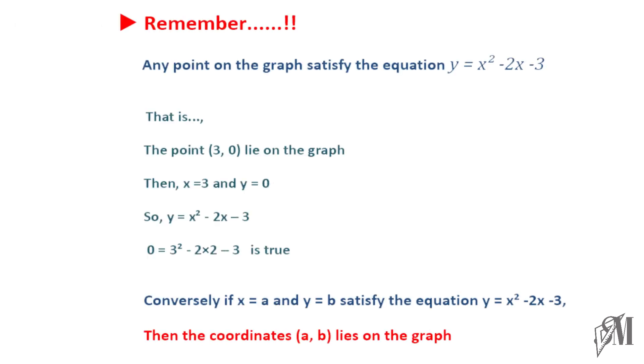You should remember that any point on the graph satisfies the graph equation y equals x squared minus 2x minus 3. That is, the point (3, 0) lies on the graph, then x is equal to 3 and y is equal to 0. So if you substitute the values of x and y in the equation, you will see the left hand side and the right hand side becomes equal to one another. Conversely, if x is equal to a and if y is equal to b satisfy the equation, then the coordinates (a, b) lie on the graph.